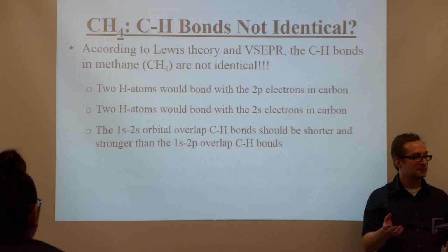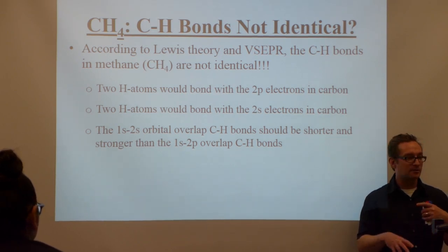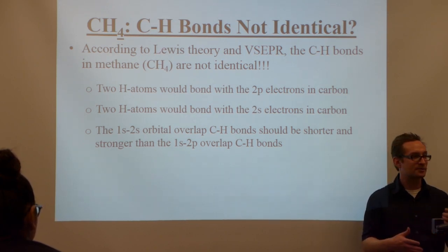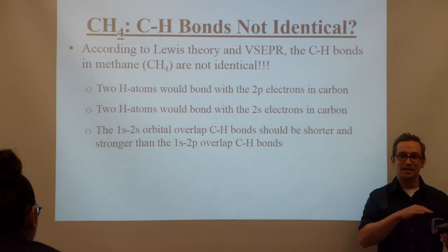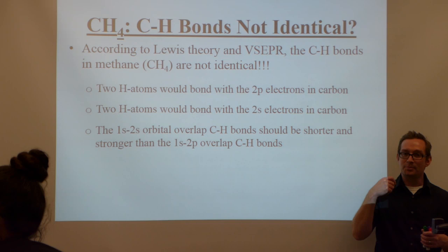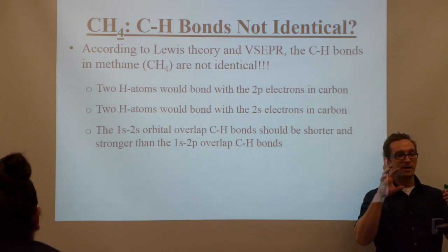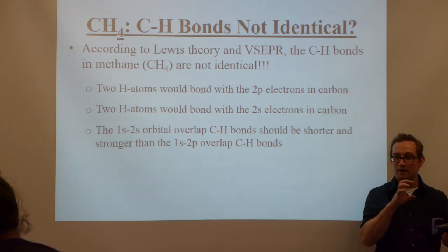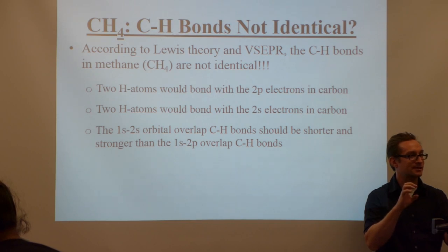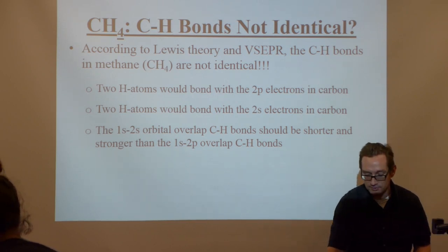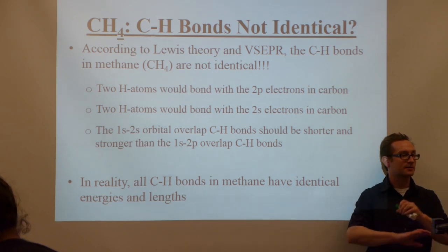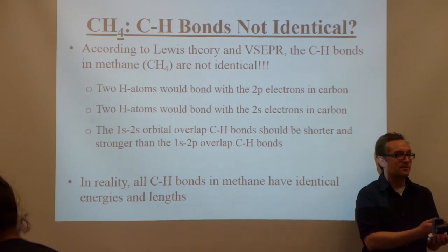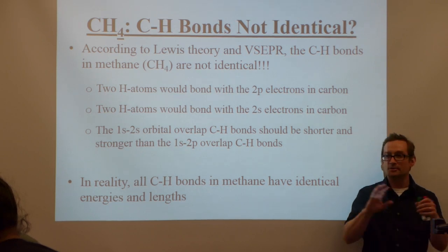Which orbitals are closer to the nucleus — the P orbitals or the S orbitals? The S orbitals are usually closer. So you would think the bond energy for carbon bonding with its 2s to the 1s of hydrogen would be stronger, because the electrons are closer to the nucleus. But experiments have shown that all the CH bonds in methane are identical in energy and identical in length.